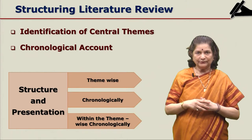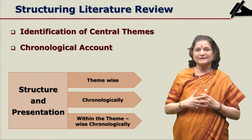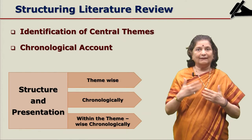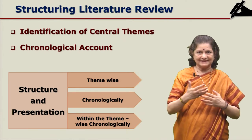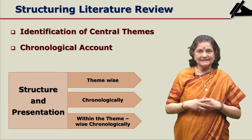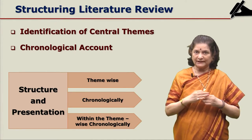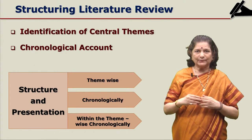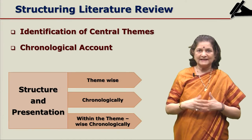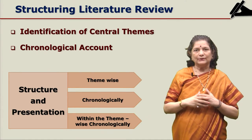Normally for chronological arrangement on the latest topics — for example, if the topic is open access — the latest articles will come first and then the earlier articles will follow. Otherwise, if you want to stress the historical development, then you can give the earliest first and the latest will come later. These are the ways you can arrange and structure your literature review chapter.